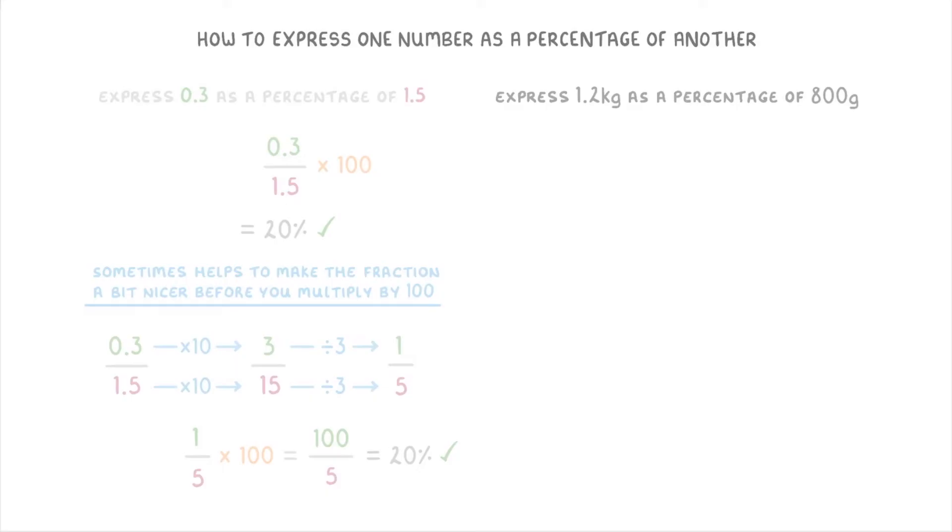For this second one, express 1.2 kilos as a percentage of 800 grams. There are two things that make it a bit different. The first is that the two numbers have different units, kilograms and grams. So we first need to make them both the same, and it's probably easier to convert the 1.2 kilos into grams, which we do by multiplying it by 1000 to get 1200 grams.